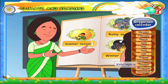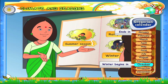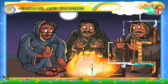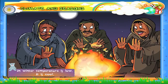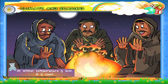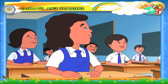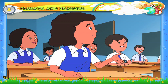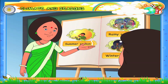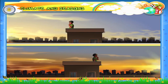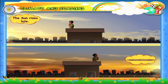Winter begins in October and ends in January. In winter, the temperature is low — it is cool. A student asks: why is the temperature low in winter? In winter, the sun rises late and sets early.